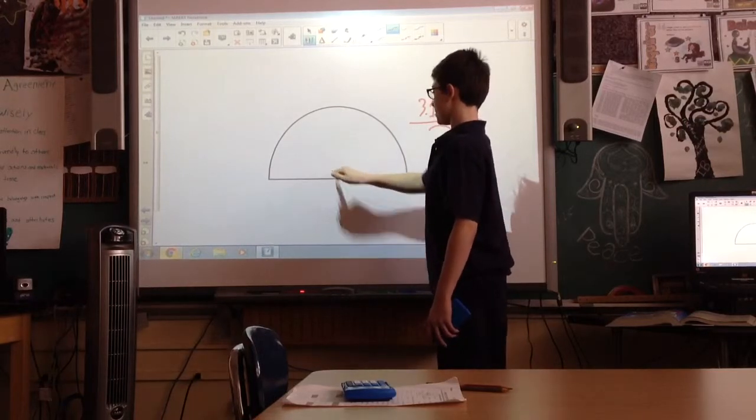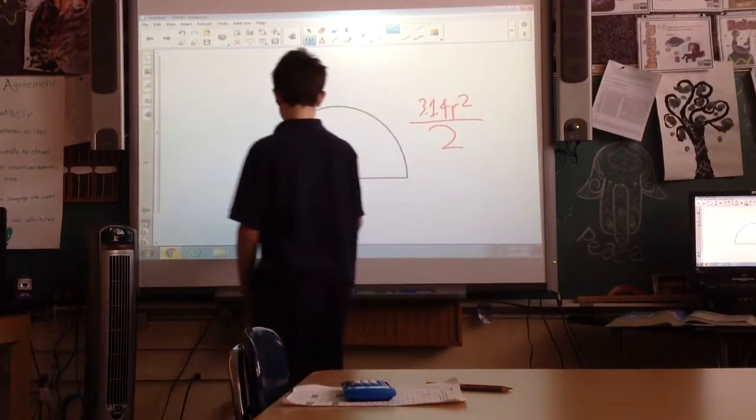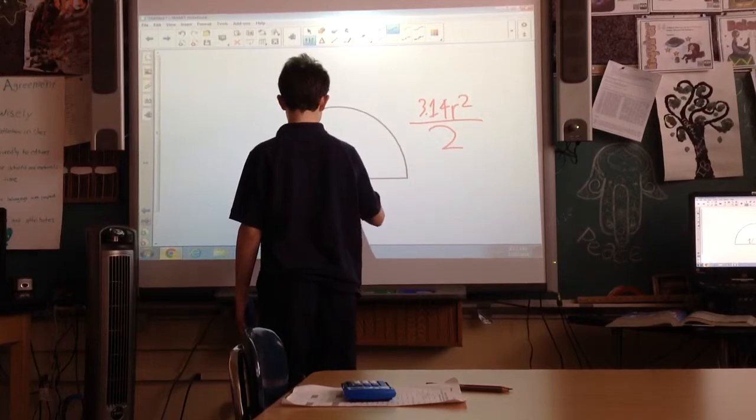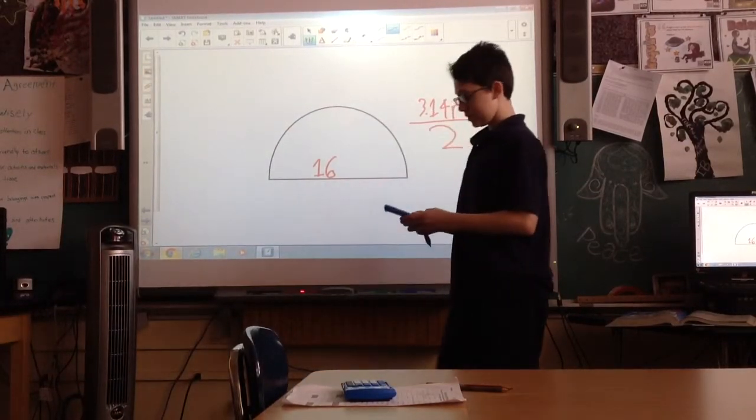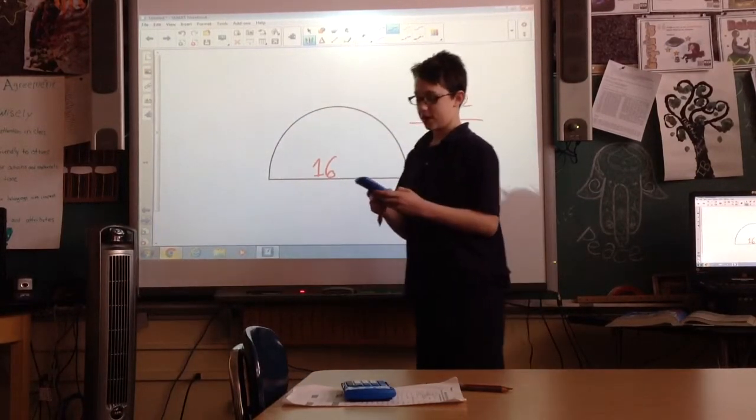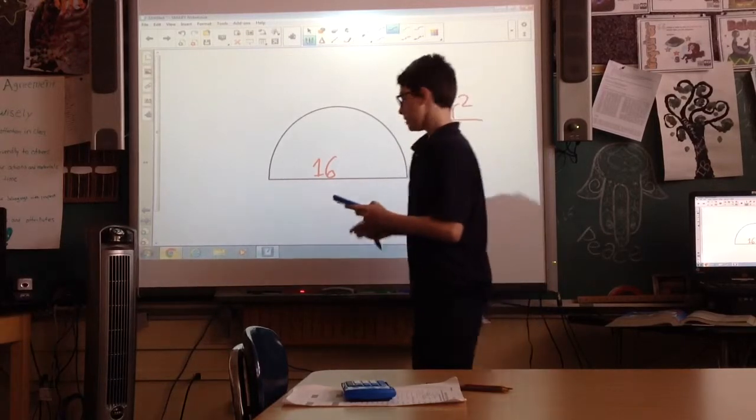Say the diameter is 16. So for 16, first, since it's the diameter, you have to do 16 divided by 2.